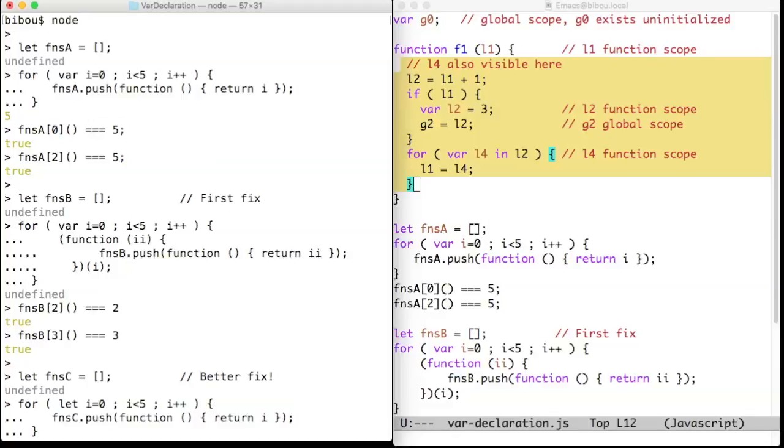The reason is that there is only one i variable here, and the five functions capture the same variable, that i here, and the last value of this variable is 5. So all these closures capture the same variable, and the last value of that variable is 5.